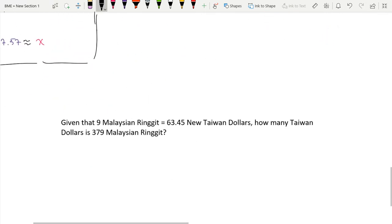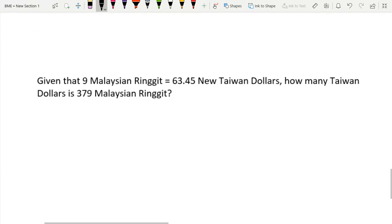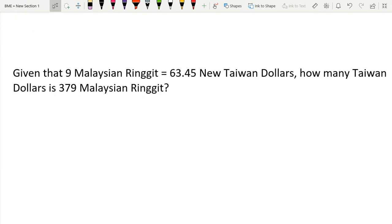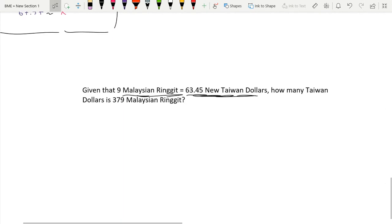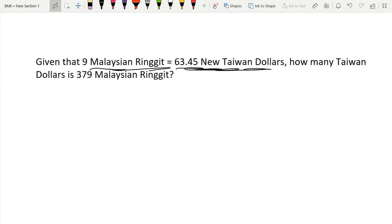Now we have one last problem just for good measure. Given that 9 Malaysian Ringgit is 63.45 New Taiwan Dollars, how many Taiwan Dollars is 379 Malaysian Ringgit? So again, same thing. This time I'm not going to do the color coding because I think we've got that. 9 Malaysian Ringgit is 63.45 Taiwanese Dollars, so 379 Malaysian Ringgit is equal to x number of Taiwanese Dollars.